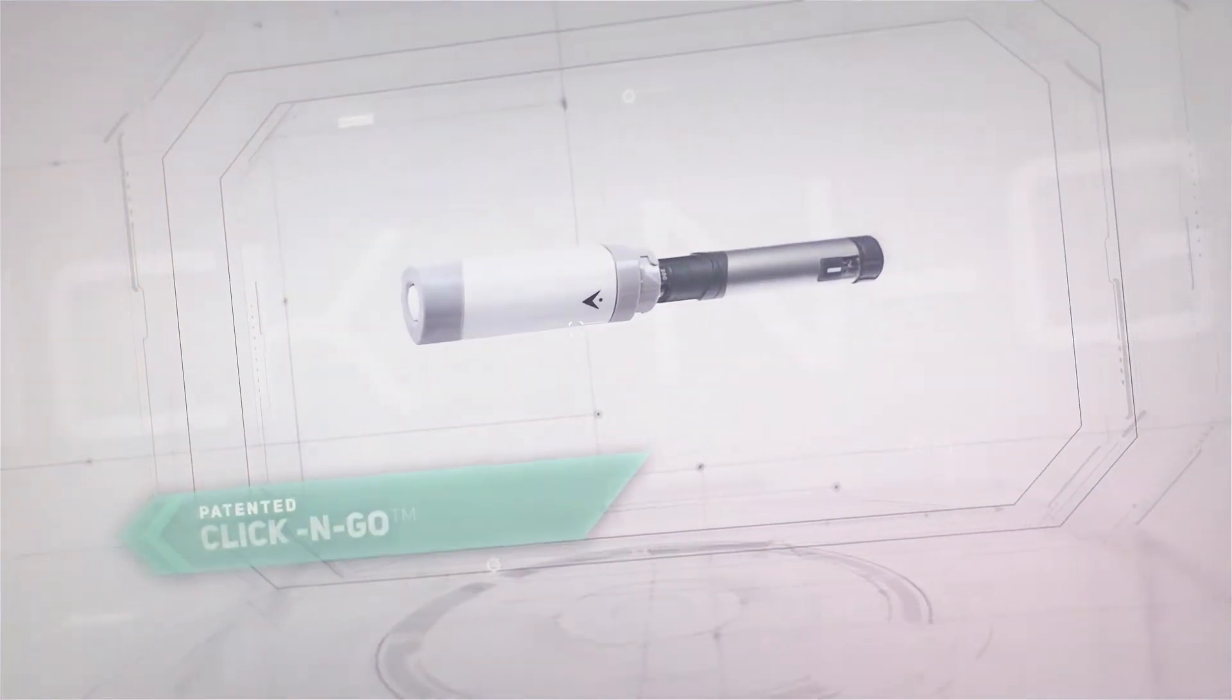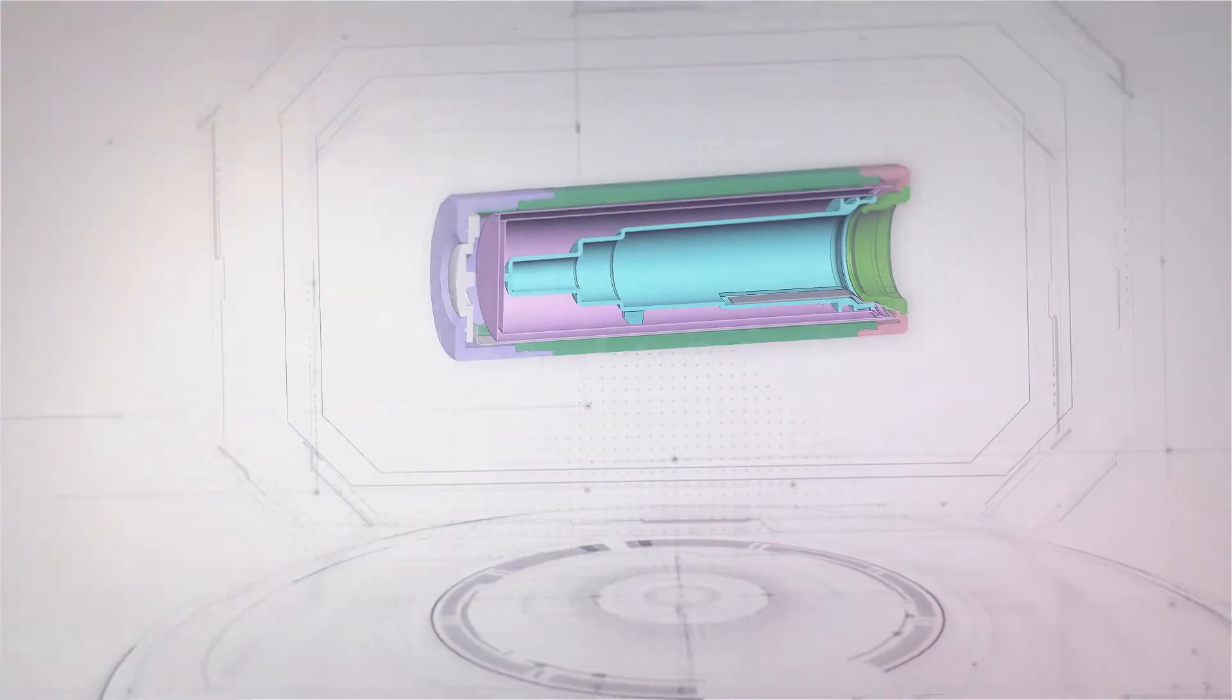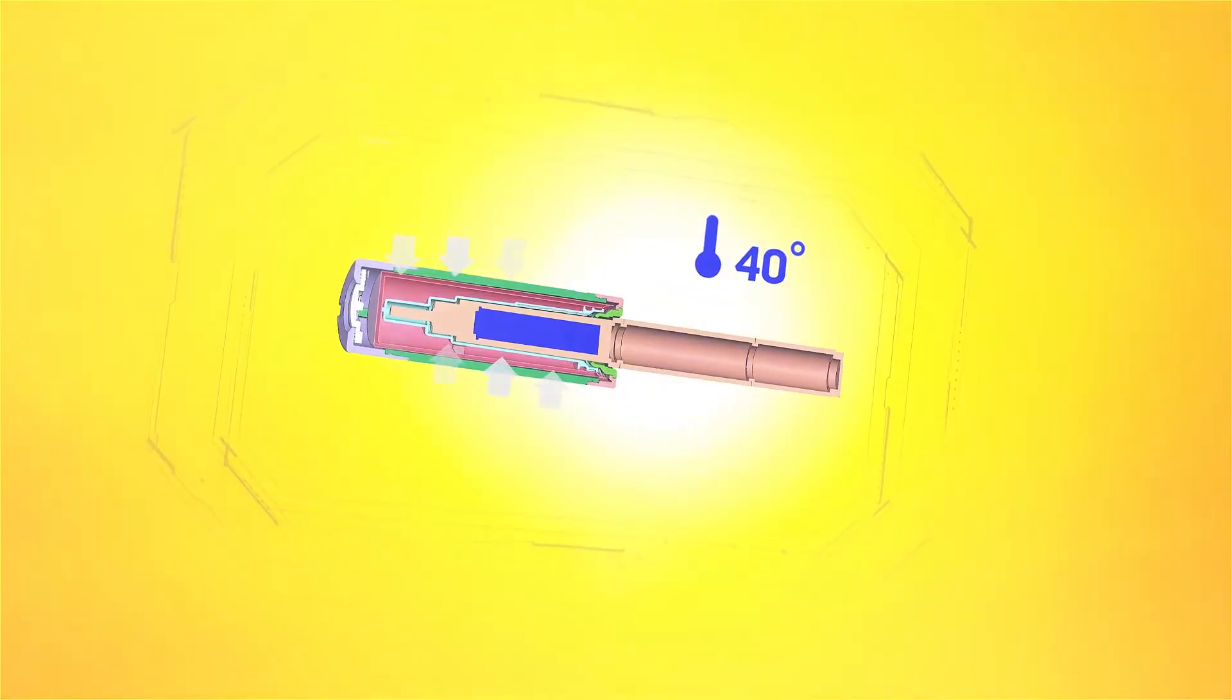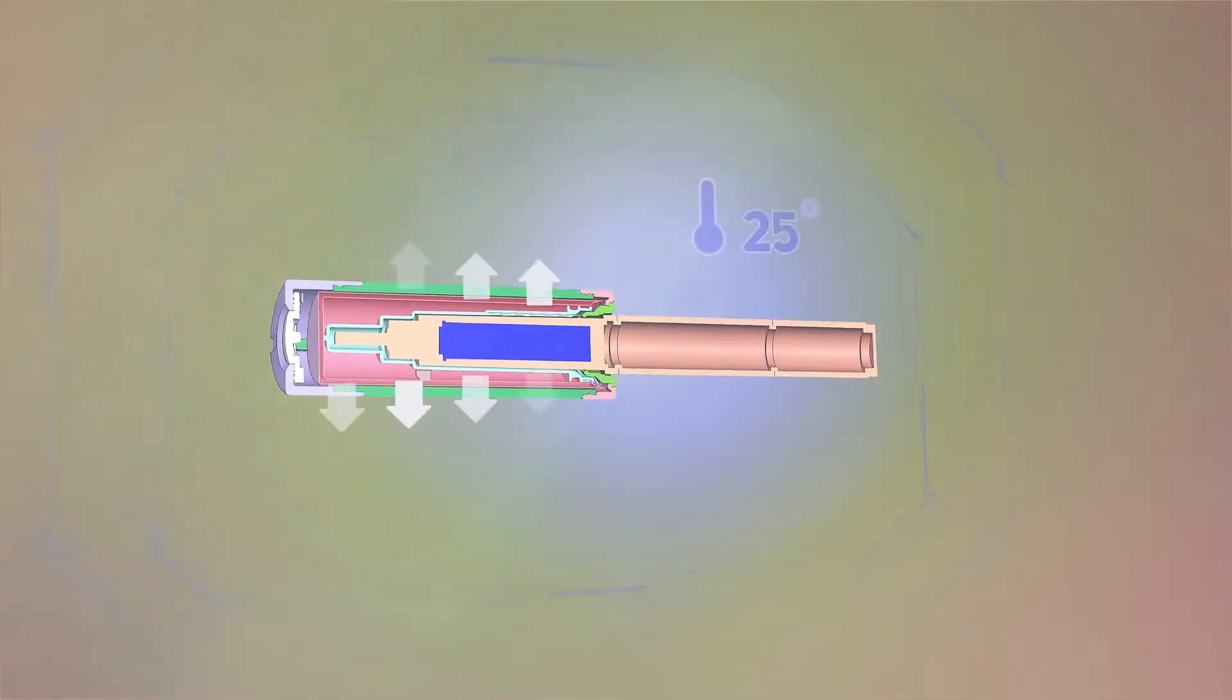Our patented click-and-go technology incorporates innovative space-grade insulation with a unique heat exchanger. This structure automatically absorbs the excess heat, releasing it to the environment when possible.